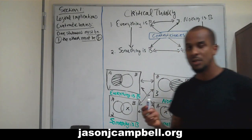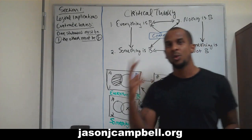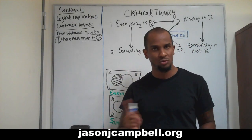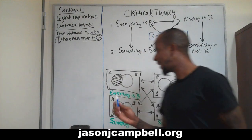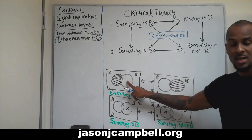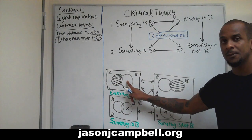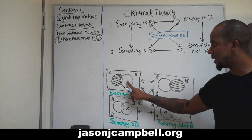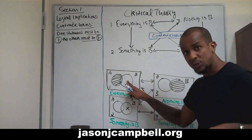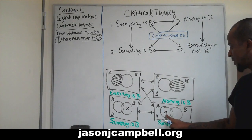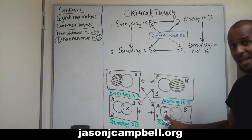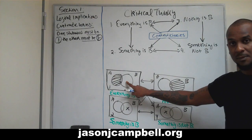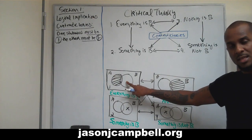Everything that runs diagonal in this image represents these contradictories. One statement can be true, one can be false. Both can't be false, both can't be true. It can't be the case that it is false that everything is B and also false that something is not B — if it's false that everything is B, then it is false.